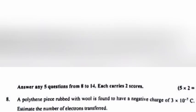Question 8: A polythene piece wrapped with wool is found to have a negative charge of 3 into 10 raised to minus 7 coulomb. Estimate the number of electrons transferred.